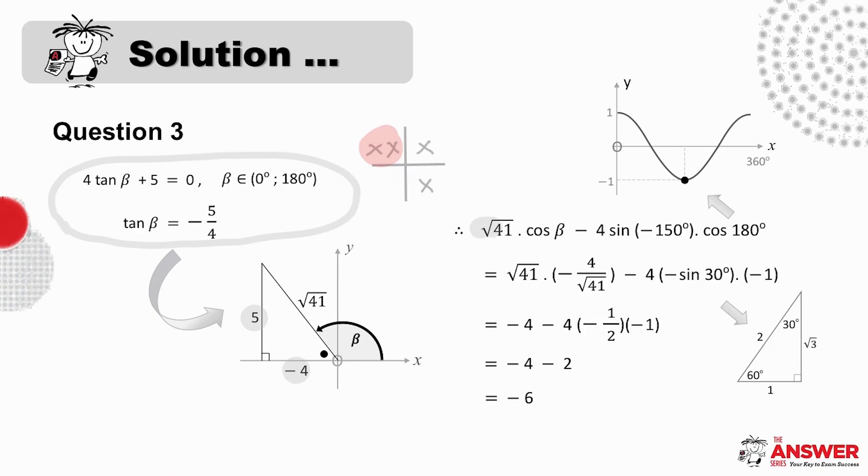If we now take a look at our expression that we need to evaluate, hopefully its context is a little clearer. We can read cos beta off as minus 4 over root 41. Then sine minus 150 is sine in the third quad, so this reduces to negative sine 30. Cos of 180 is minus 1. Remember to make a quick basic cos graph sketch to check this. And just one more trig application here with a 30-60 degree triangle. And then as you continue through, it is crucial to follow through accurately and confidently with your algebra. And the value of this expression is therefore minus 6.